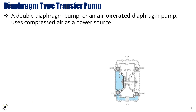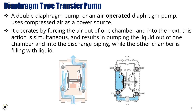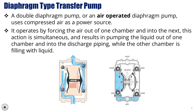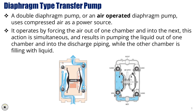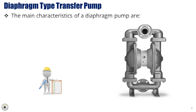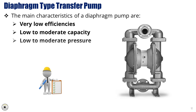A double diaphragm pump, or air-operated diaphragm pump, uses compressed air as a power source. It operates by forcing air out of one chamber and into the next simultaneously, pumping liquid out of one chamber into the discharge piping while the other chamber is filling with liquid. Diaphragm pumps have a few key characteristics: their efficiency is very low compared to other pumps, they handle low to moderate flow capacities and pressures, and they don't use seals, which helps reduce leakage risks. However, they do generate high pulsation, which can lead to unsteady flow.